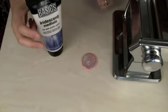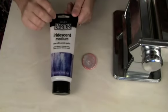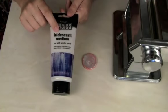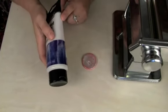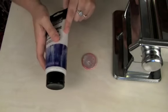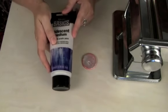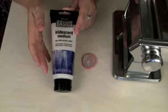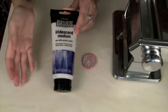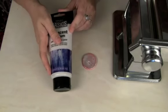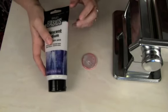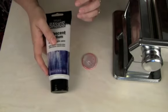Today we're going to be using this Liquitex iridescent medium. This is a gel medium that has pearl mica in it, and you can mix it with your acrylic paint to make a non-pearlescent paint into a pearlescent paint. But we're going to use it in a totally different way with our polymer clay.